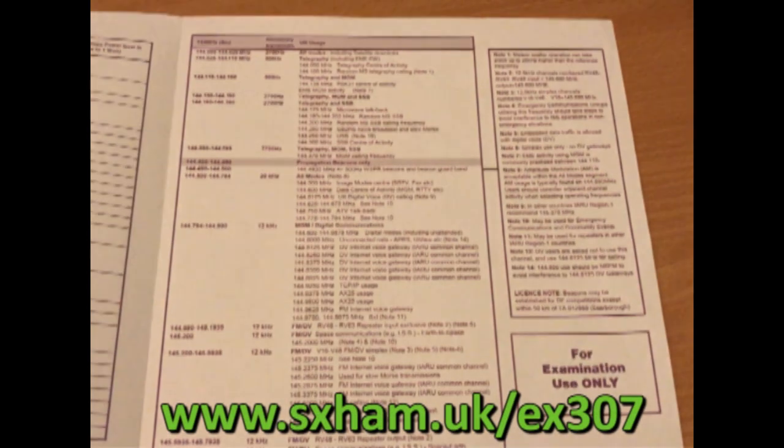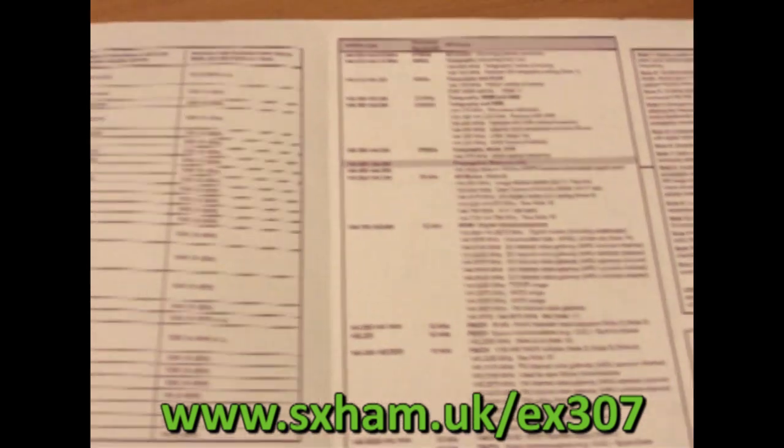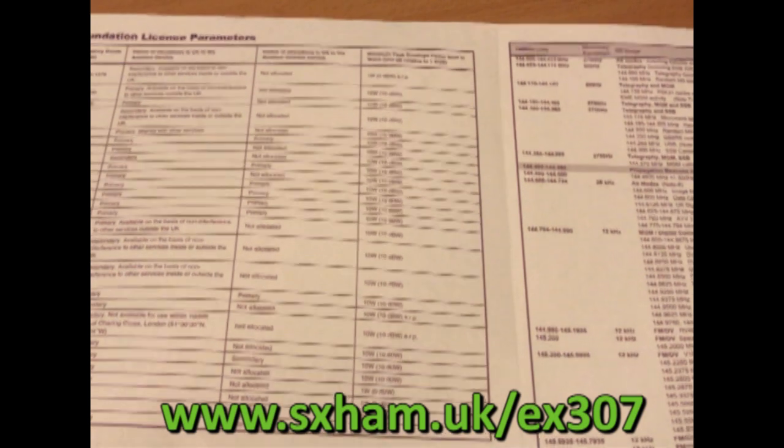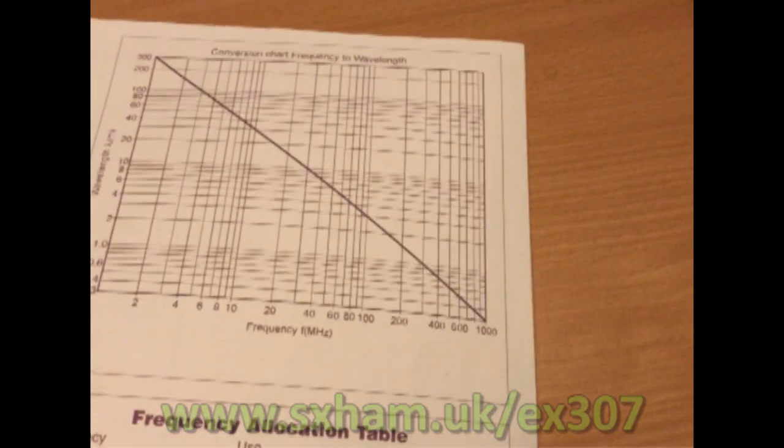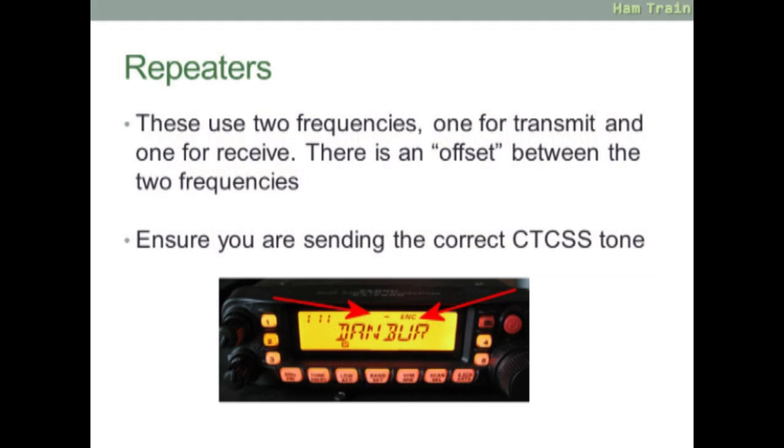The schedule and band plan are both given in the exam booklet. It's worth getting a copy now and getting used to the layout and terminology. Repeaters use two frequencies, one for transmit and one for receive, with an offset between them. When accessing a repeater, you need to send the correct CTCSS tones.